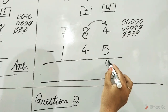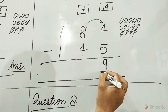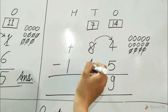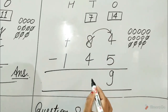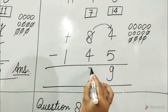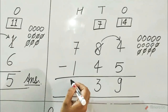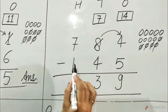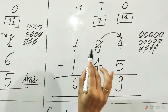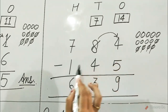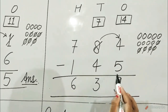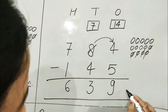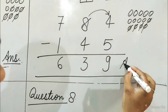Write 9 in the ones column. Subtract the tens column. 7 minus 4 is equal to 3. 7 minus 1 is equal to 6. Hence, 784 minus 145 is equal to 639. Write answer.